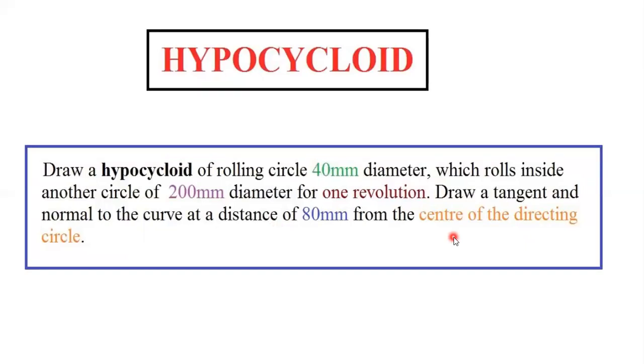Before starting the diagram, we need just two data points: smaller circle diameter = 40 mm, and bigger circle diameter = 200 mm. The first step is to draw a straight line as your reference line.